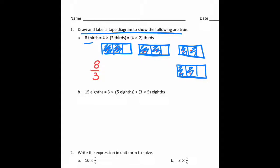Let's look at the next one. It says 15 eighths equals 3 times 5 eighths. So I'm going to do 3 groups of 5 eighths. So I'm going to separate my tape diagrams into eighths. I'm going to color in 5: 1, 2, 3, 4, 5. I'm going to make another one because it's 3 groups of this. Separate it into eighths. 1, 2, 3, 4, 5. And one more because I need 3 groups.